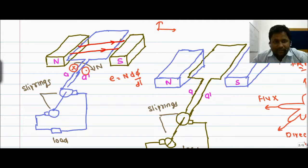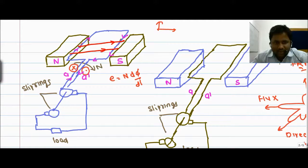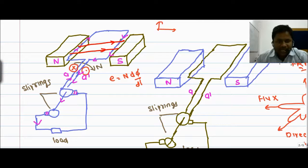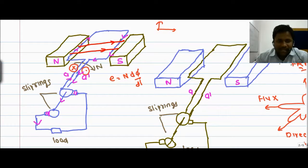Now, if we draw the direction of the current — suppose A is having a cross, meaning current is entering. Similarly at A dash the current is leaving. After leaving, it goes through these points and comes back into the loop. The brushes are fixed but the slip rings touch these brushes as the coil rotates. As a result, the current comes to the brushes and goes towards the load.